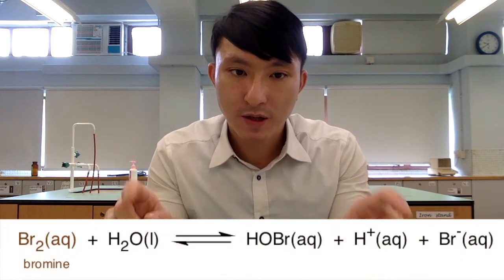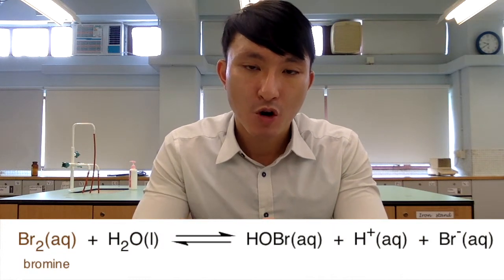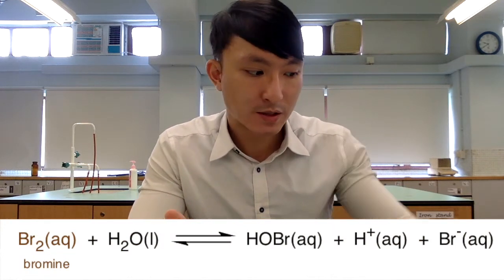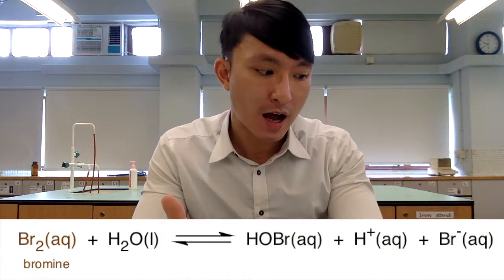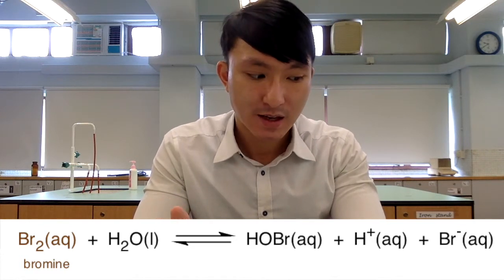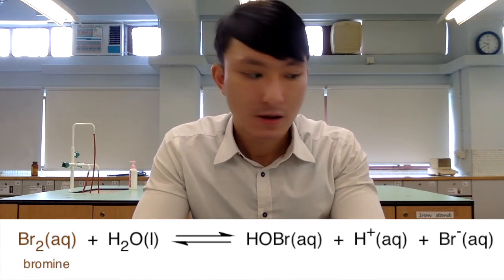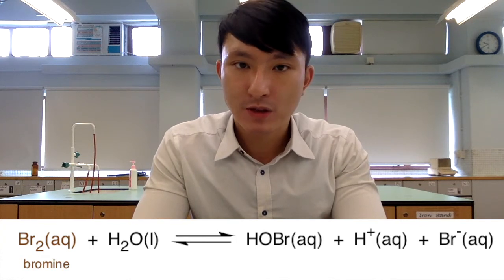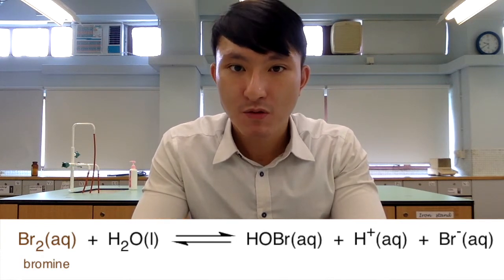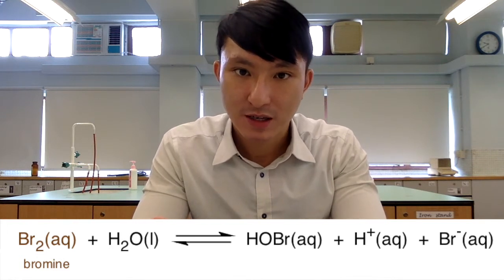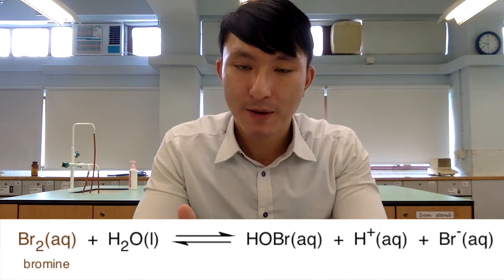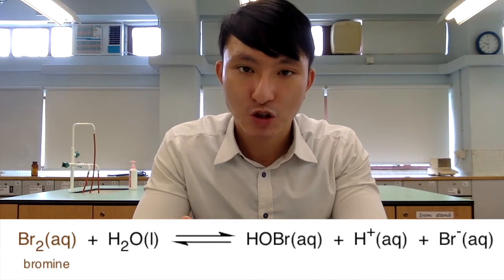For the second equilibrium system, we are interested in looking at bromine solution. As you can see from the equation, bromine is able to react with water to form hypobromous acid, H+, and bromide ion. Bromine in aqueous solution appears brown to yellow depending on the concentration, and the rest of the chemical species involved are colorless.